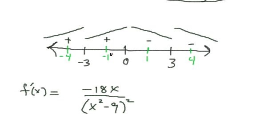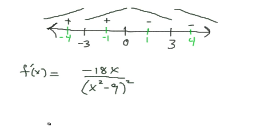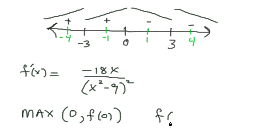Now what we want to do, since this is going to be our only relative max here is 0, we want to take 0, plug it into the original, and that's going to be our relative max. So we're going to have to say our relative maximum is going to occur at 0 comma f of 0, and of course remember that f of 0 is going to be equal to zero.